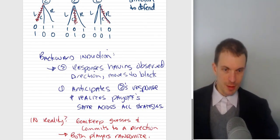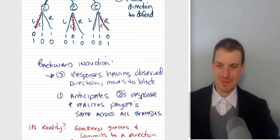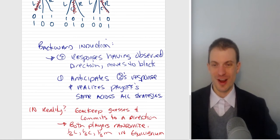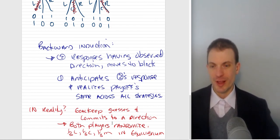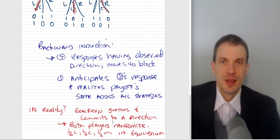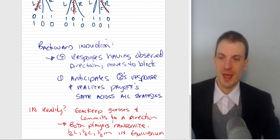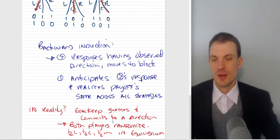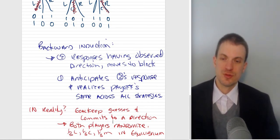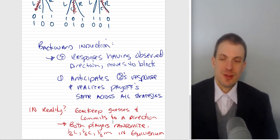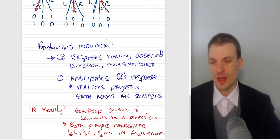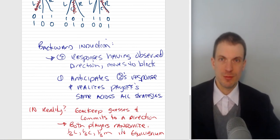In reality, what probably happens, in reality, probably what happens is the goalkeeper guesses and commits to a direction. And then if they guess wrong, goal scored. If they guess right, goal's blocked. And so probably what ends up happening, and there's some evidence studying lots of games, seems that players could potentially choose some type of, the Nash equilibrium would be players are randomizing. So playing left, center, and middle one third of the time in equilibrium would keep the opponent indifferent between their strategies.